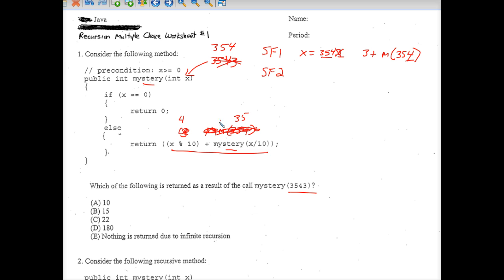So we've now analyzed that we need to take 4 plus the m of 35. So in other words, in stack frame 2, the parameter was 354. And stack frame 2 ended up elsing to 4 plus the m, the mystery, of 35.